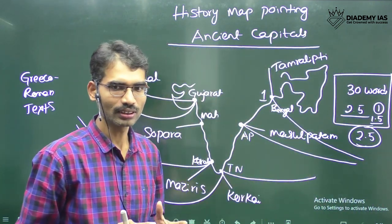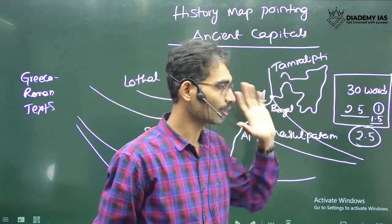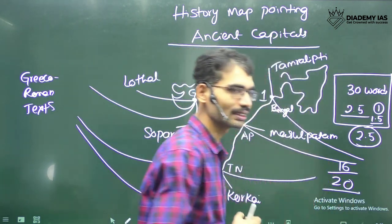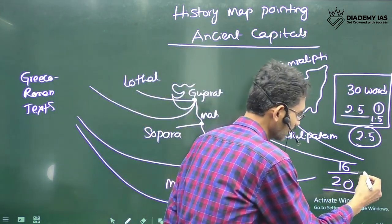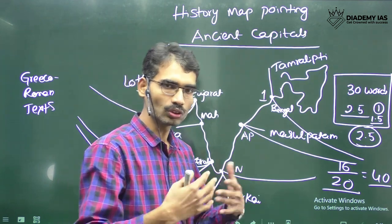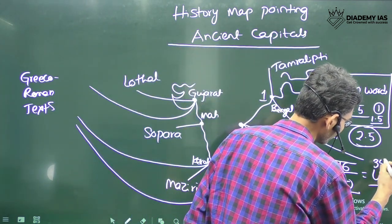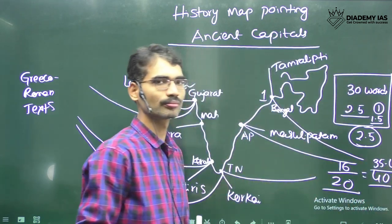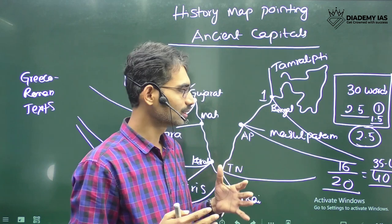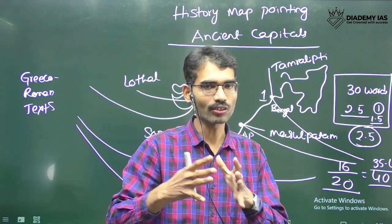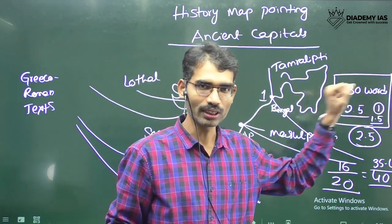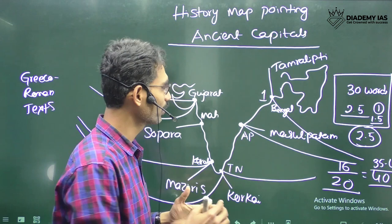It is the only place in our history where 100% marks are achievable for a particular question. Even if you get 16 out of 20 questions right, getting 2.5 for each gives you 40 marks. Overall, 35 to 40 marks is easy to get — that is 75 to 80% of the marks, which is very rare. That is why it is a very high mark-scoring area, and also very challenging. We need to go very systematically.